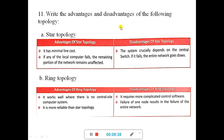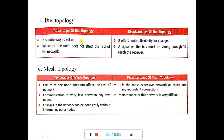Next, write the advantages and disadvantages of all the topologies. I have given star topology with its advantage and disadvantage, and ring topology. I have already explained this in my previous video, so you can refer to the previous video or write it down from here. Also covered are bus topology and mesh topology — all advantages and disadvantages of all four topologies are explained in my previous video.